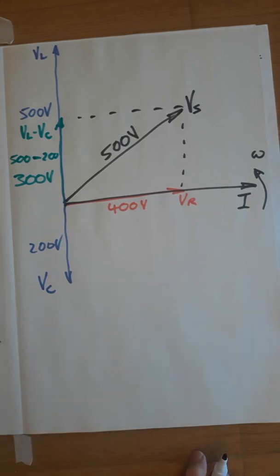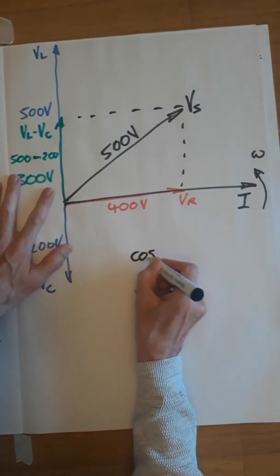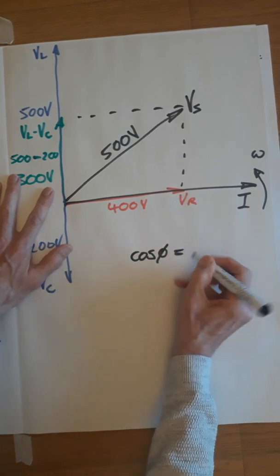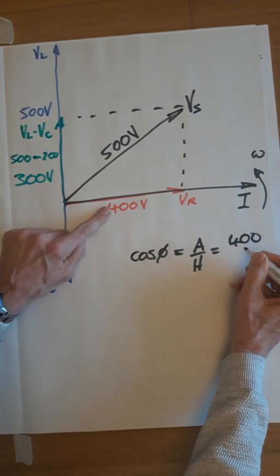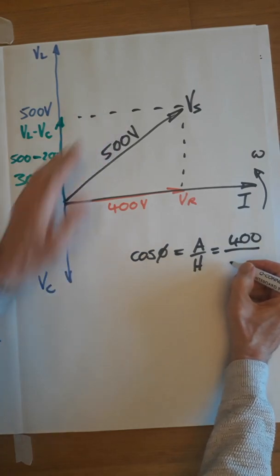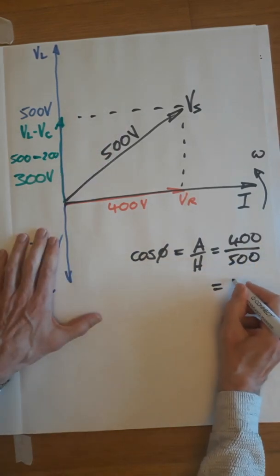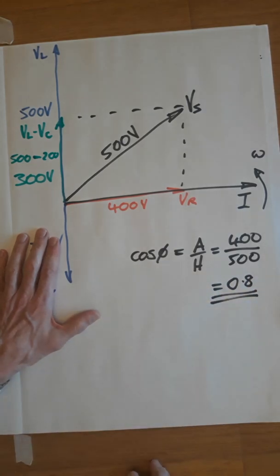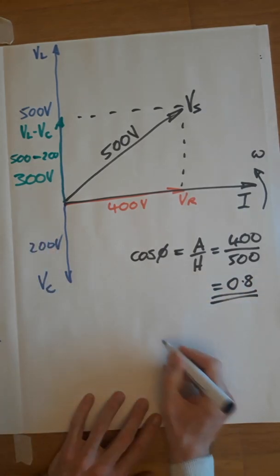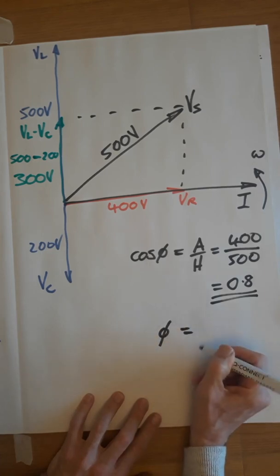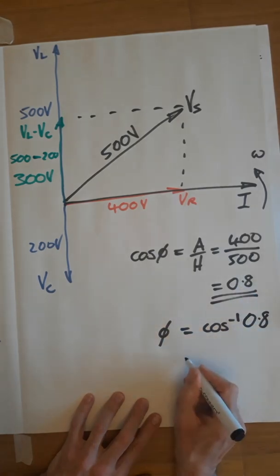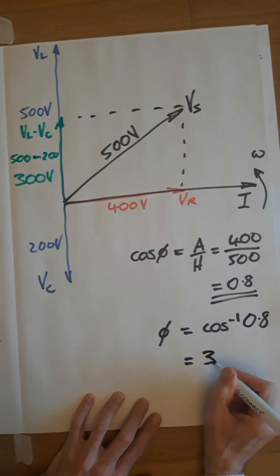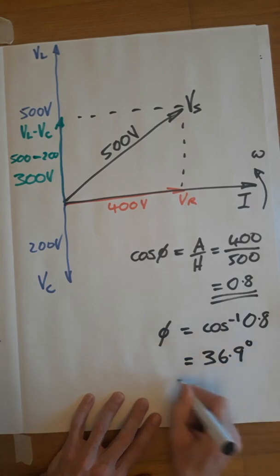Again, the final step is to find the power factor and the phase angle. So, power factor. Cos phi equals A over H is 400, which is your adjacent over 500, which is the hypotenuse. And that comes to 0.8. Finding the phase angle. We did that a few minutes ago. Phi is cos to the minus 1 of that number, 0.8. And if you put that in your calculator from memory, that's 36.9 degrees.